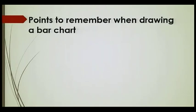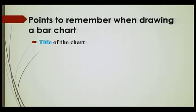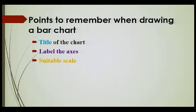There are some important points to remember when drawing a bar chart. The first one is the title of the chart — you need to include a title when you're drawing your bar chart, for example, 'Amount of Rainfall During the First Five Months of the Year.' The second point is you need to label your axes. For example, for the x-axis you might have marks, and for the y-axis you can have number of students.